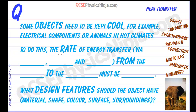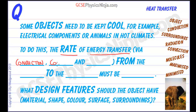To do this, the rate of energy transfer — that's heat loss, if you like — via conduction. What are the other two ways of heat transfer? Well, we've got convection and radiation.